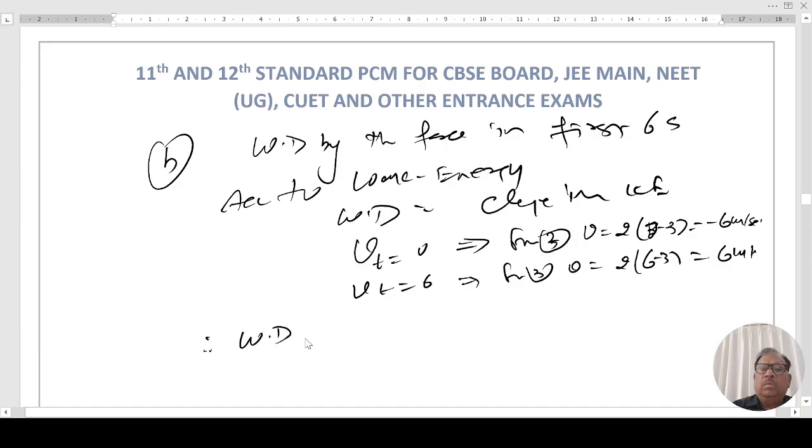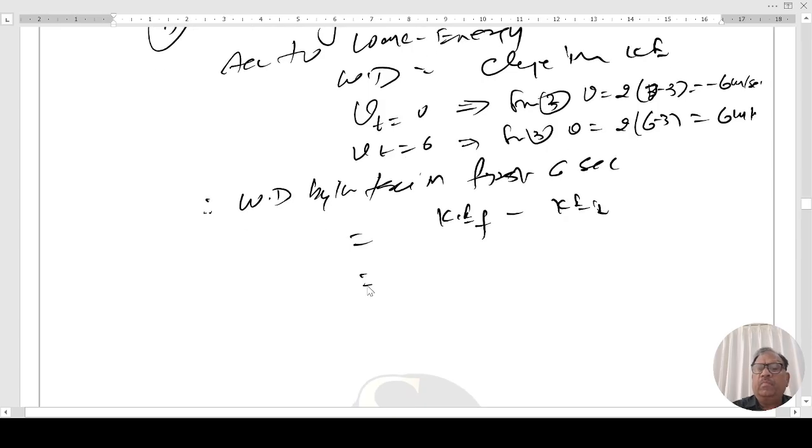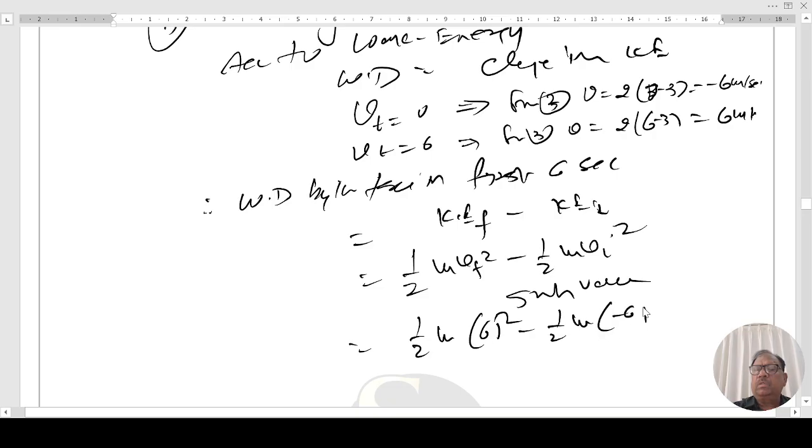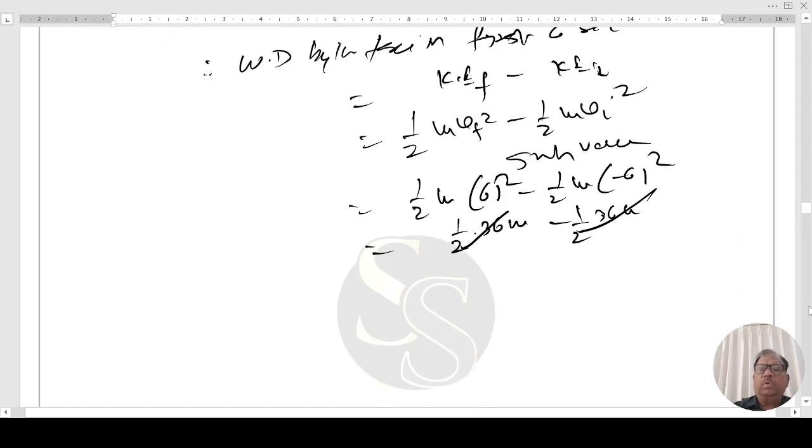Therefore work done by the force in six seconds will be equal to kinetic energy final minus kinetic energy initial. That is half m v₆ squared minus half m v₀ squared. Putting values, half m 6 squared minus half m minus 6 squared. That is half m into 36 minus half m into 36. This cancels. This comes out to the answer zero.